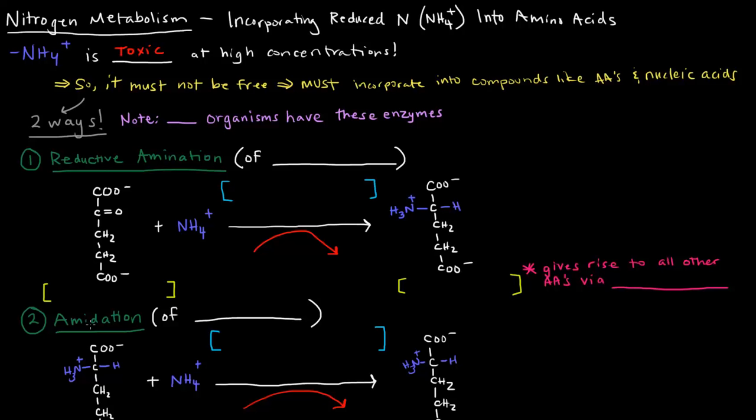Reductive amination and amidation. These are enzyme catalyzed processes, and all organisms have these enzymes. The reductive amination will be of alpha-ketoglutarate. What we're going to do to alpha-ketoglutarate, which is right here, we're going to take alpha-ketoglutarate, which we've seen before in the TCA cycle. Here we have this alpha-ketoglutarate and an ammonium ion.